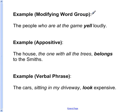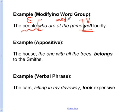Let's look at a modifying word group in between the subject and verb instead of a prepositional phrase. The people who are at the game yell loudly. Yell is the main verb of the sentence and the subject is people. There's a modifying word group between the subject and the verb. In this modifying word group is the word game. We may think the subject is game, which is singular, which would make the singular verb form yells. But this sentence as it is is correct. The subject is people — it's plural — and the plural verb form of to yell is yell.